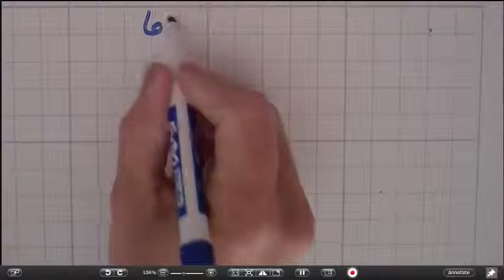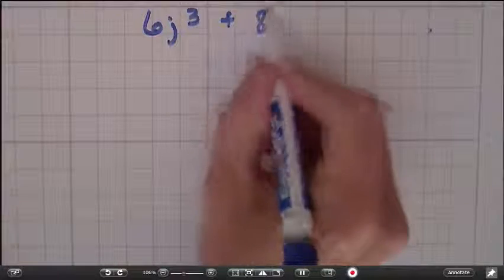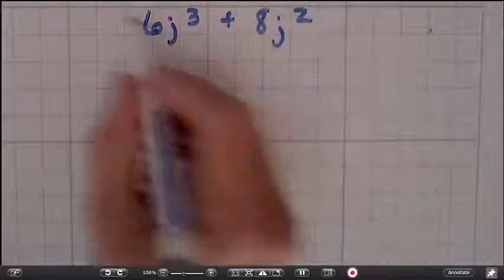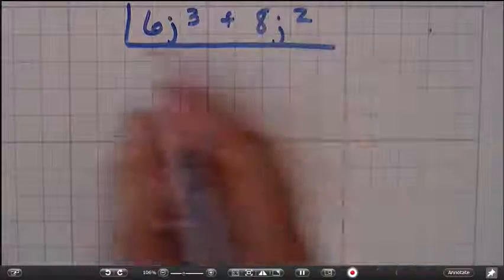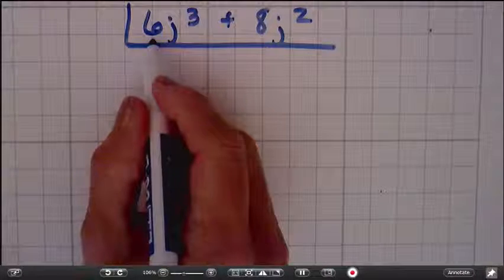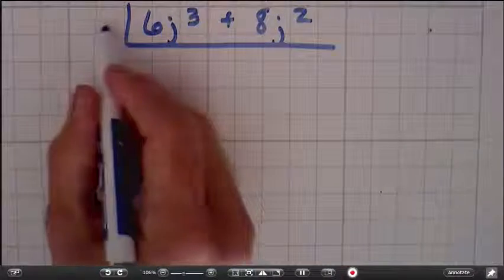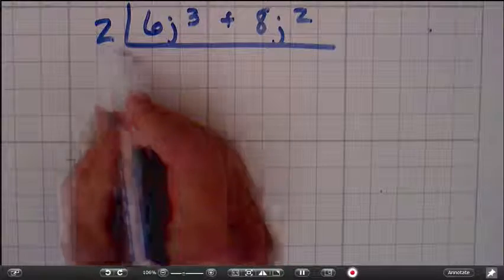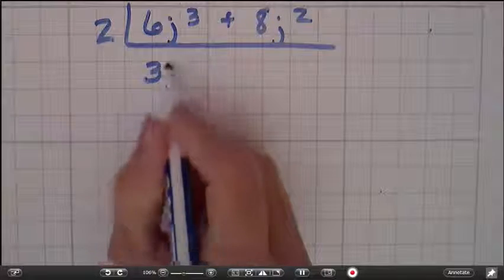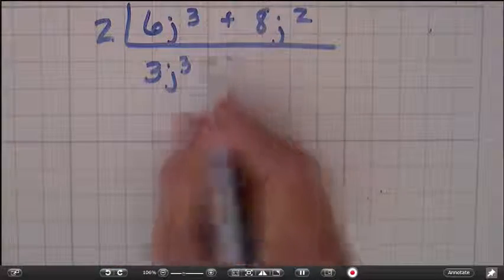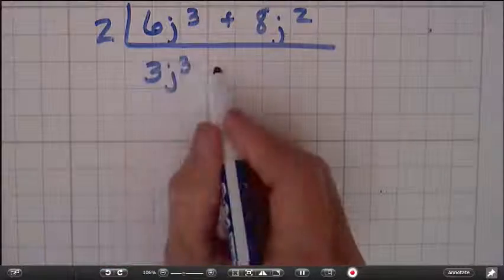6j cubed plus 8j squared. What number can we take out of both 6 and 8? We can take a 2 out. 6 divided by 2 is 3. I'm bringing my j cubed down.